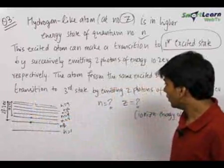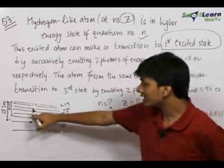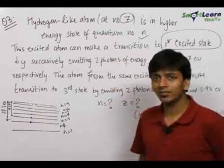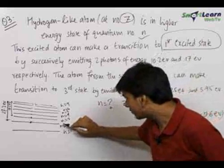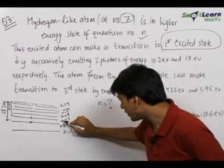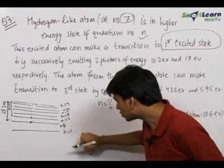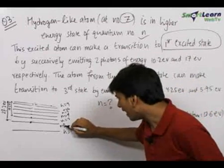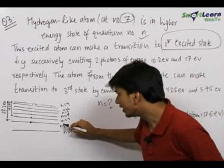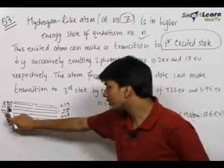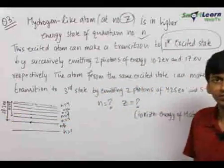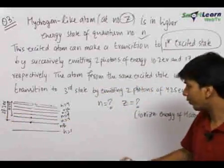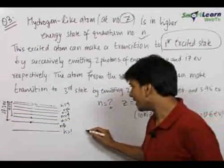We can see clearly from this diagram that the energy difference between the n=3 state and the n=2 state is equal to 27.2 minus 10.2 eV = 17 eV. Therefore we write the energy difference between the third and second states.